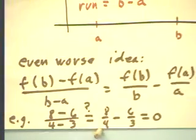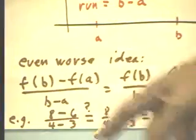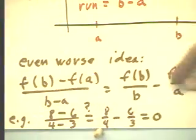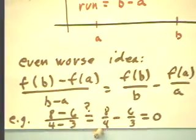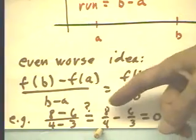And, of course, here's a numerical example. If F of B is 8 and F of A is 6 and B is 4 and A is 3, then if this is true, then 8 minus 6 over 4 minus 3 has to be 8 over 4 minus 6 over 3. 8 over 4 is 2, 6 over 3 is 2, so 2 minus 2 is 0.